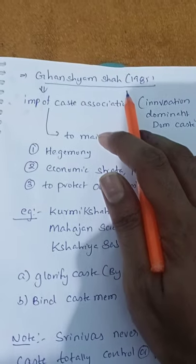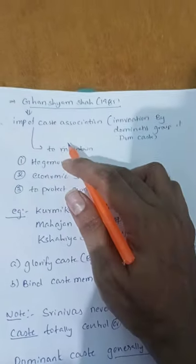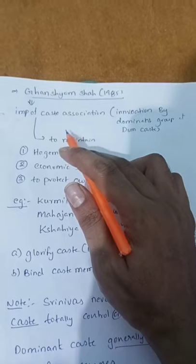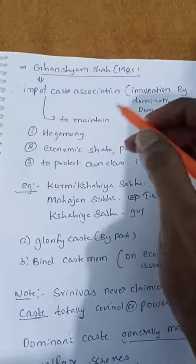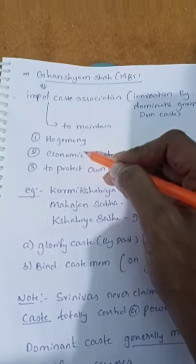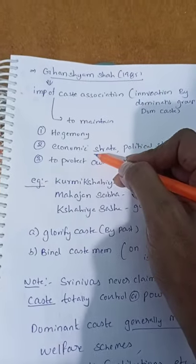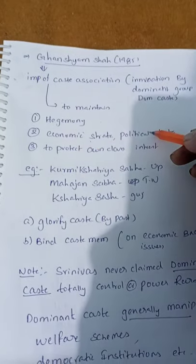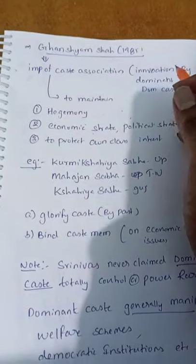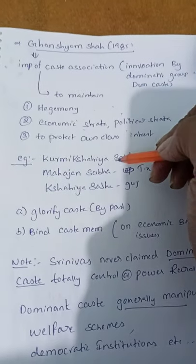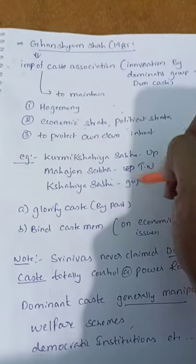According to Ganesh Shah in 1985, he gave importance to the caste association. This caste association is driven by dominant groups or dominant castes to maintain their hegemony by consolidating economic and political strata in favor of their own class interests. Examples include the Kurmi Kshatriya Sabha in UP, the Mahajan Sabha in Tamil Nadu, and the Kshatriya Sabha in Gujarat.